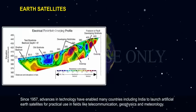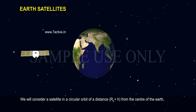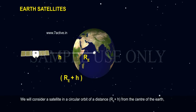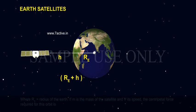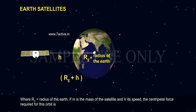We will consider a satellite in a circular orbit at a distance RE plus H from the centre of the Earth, where RE equals the radius of the Earth.